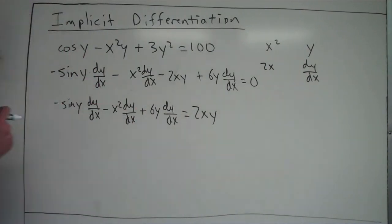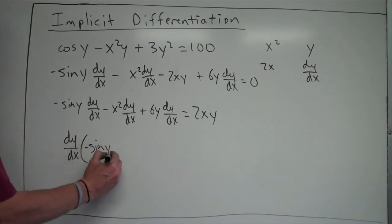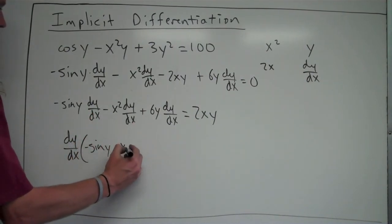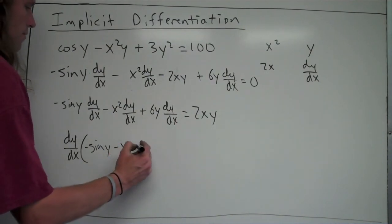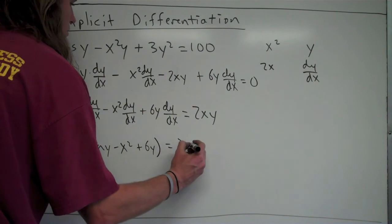Alright, now where I have all my dy over dx's here, I'm going to factor out my dy over dx. So I'll factor dy over dx out from all of those terms, and so I'll be left with, in this term, I'm left with negative sine of y. Over here I'm left with minus x squared. Right here I'm left with plus 6y equals 2xy.